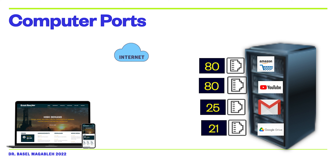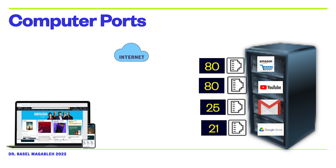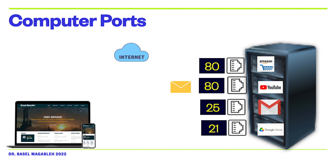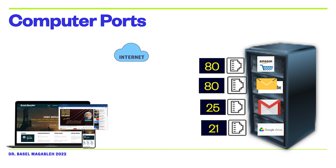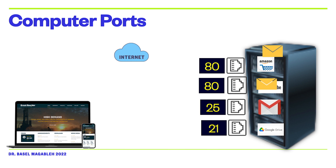But what if the client also needs to watch a YouTube video, send a new email, or upload a file? In this case, the client computer must request the right content from the server and must specify the right port number. If the client wants to view web content, it sends a request to port 80. YouTube is also port 80, since both Amazon and YouTube are web servers. If the client wants to send a new email via Gmail, it uses port 25, which is where the SMTP server operates. If the client wants to upload a file to Google Drive, it uses port 21, which is allocated to File Transfer Protocol.